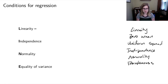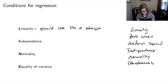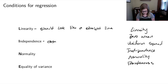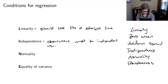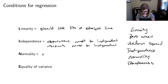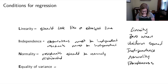Linearity is the first condition — it needs to look like a straight line. One way it could be violated is if it actually looks like a curved line. Independence means observations must be independent of one another, and residuals must also be independent. Normality means residuals should be normally distributed. Equality of variance means residuals should have equal variance regardless of the fitted value.